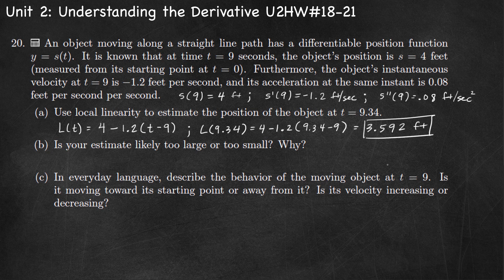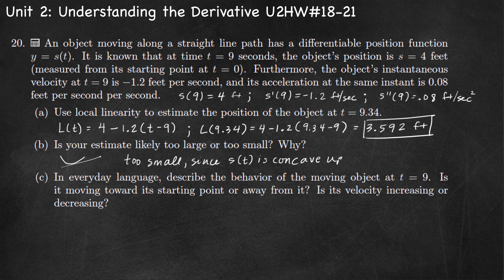Is that estimate likely too large or too small? At t equals 9, the second derivative is positive 0.08, meaning the position function is concave up. When the function is concave up, the tangent line lies below the curve, so the estimate is an underestimate — too small — since s of t is concave up at t equals 9 seconds.